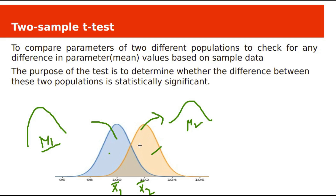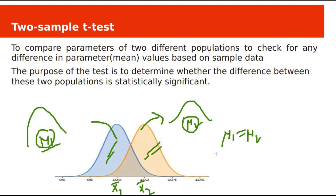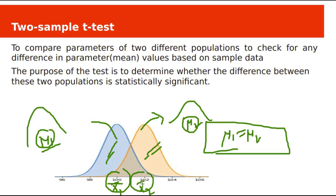Sometimes these two samples might come from two populations with different mean values, where mu1 differs from mu2. Sometimes the samples might come from two populations with equal population means, mu1 equal to mu2. If the population means are equal but sample means are different (100 and 102), the difference might be due to sampling bias. In another case, mu1 and mu2 may not be equal, causing the sample means to differ.